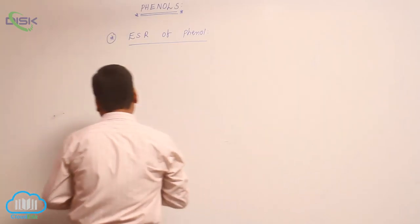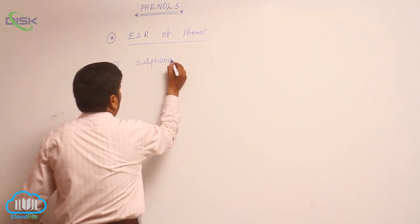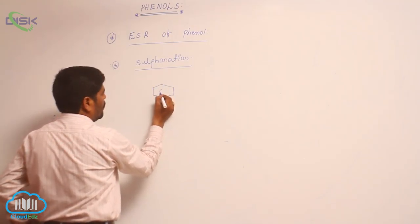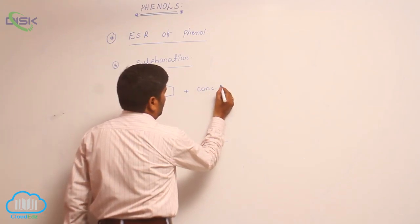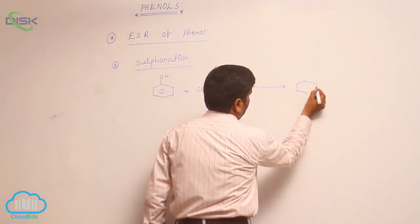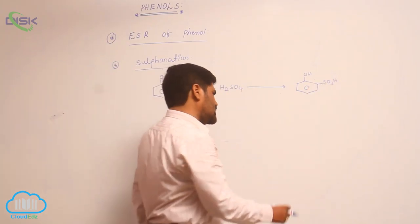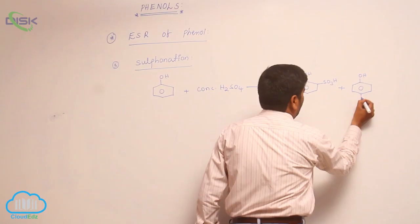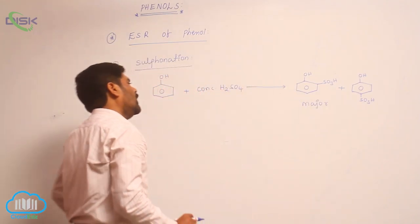The third reaction is sulfonation. Phenol reacts with concentrated sulfuric acid to form ortho-hydroxy benzene sulfonic acid. Here also, the ortho product is major due to hydrogen bonding.